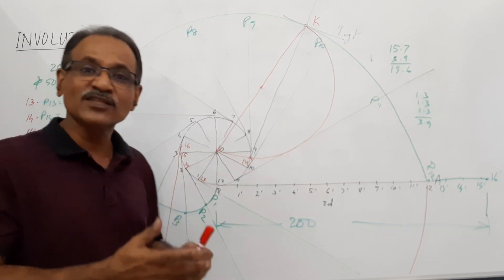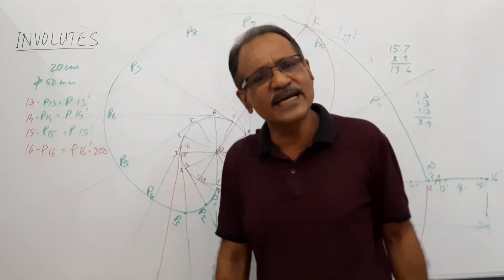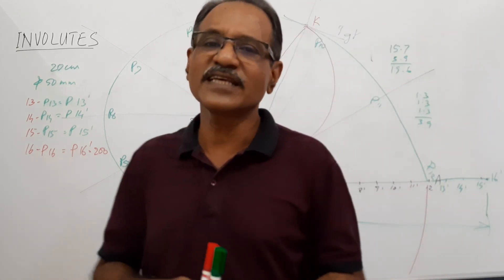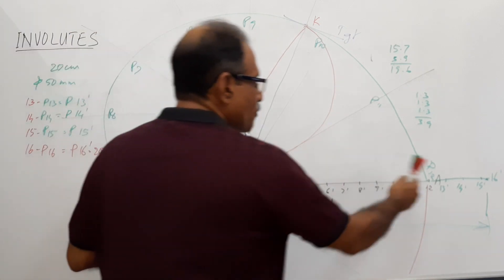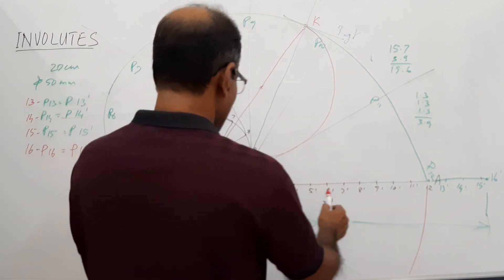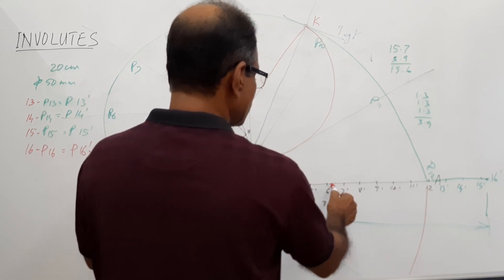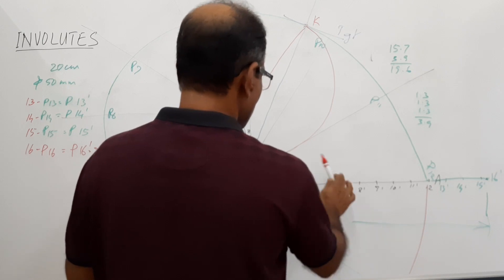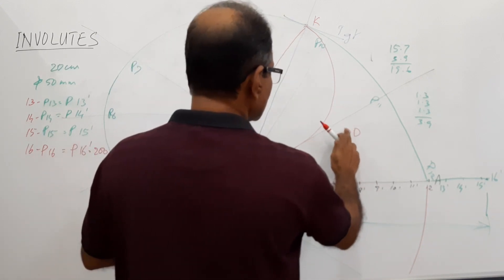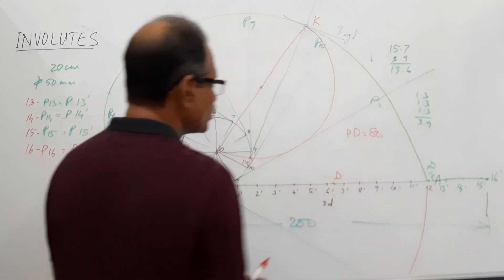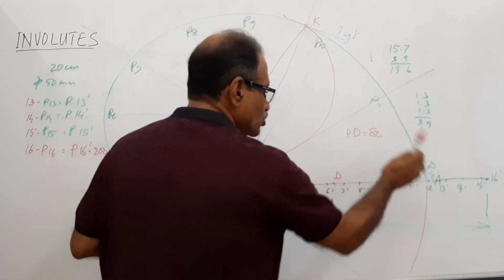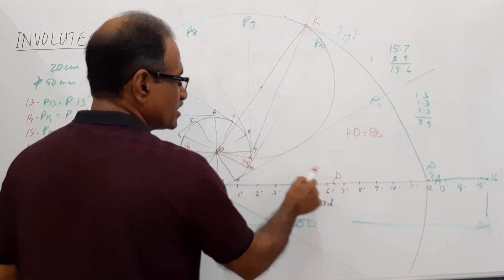Now, this was the case where the length of the string is more than the circumference. Suppose the length of the string is less than the circumference — let us take a case where the length of the string is 8 centimeters. Draw the circle of 50 mm diameter, divide it into 12 equal parts, and mark 8 centimeters on this line. Since the circumference is 15.7, the 8 cm mark will come somewhere here — I call it point C or T. So Pd equals 80 mm.